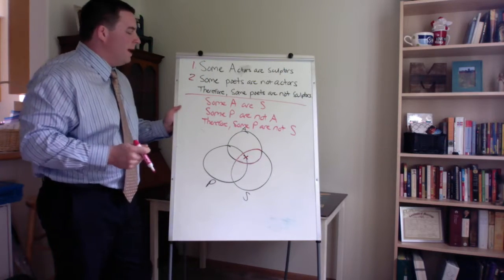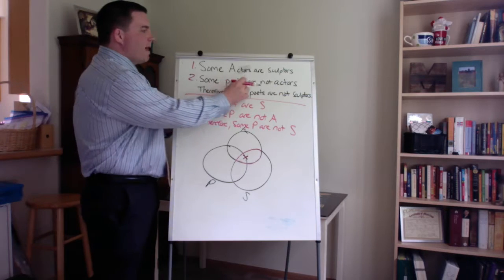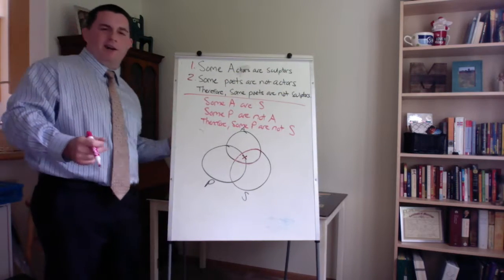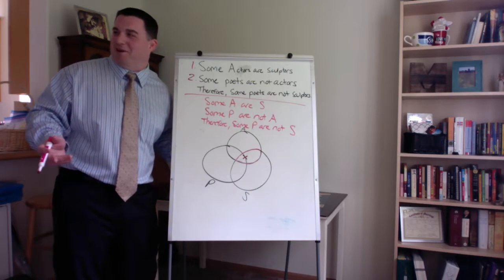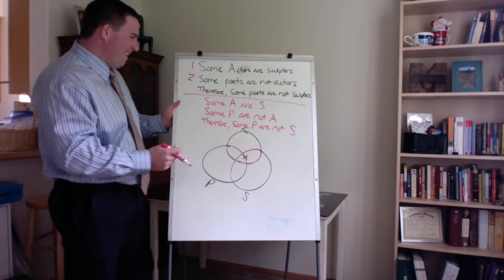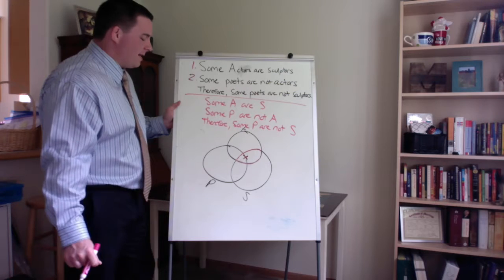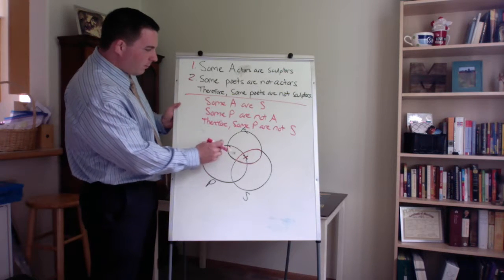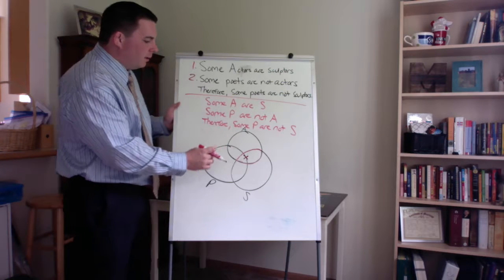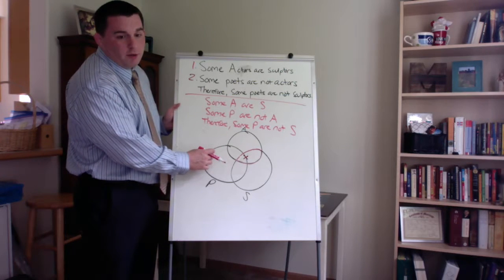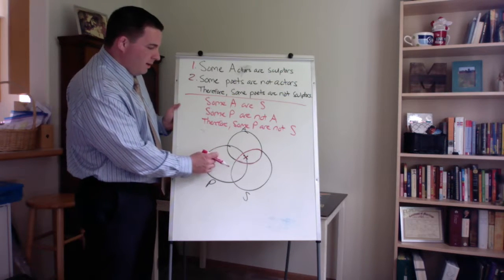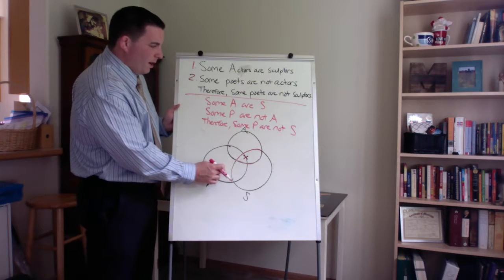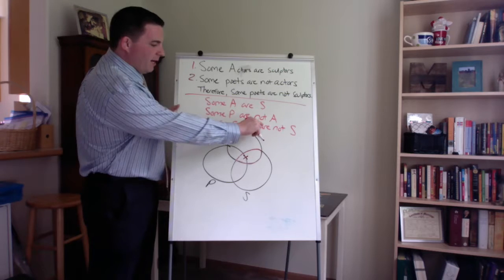Premise two, same scenario. Some poets are not actors. I don't think a pet would be an actor, do you? Probably not. So some P are not A. So we want to here look at the P circle. And we want to look at the P circle that's outside of the S circle. So we know one P exists, but it's not an A.